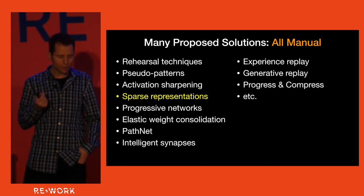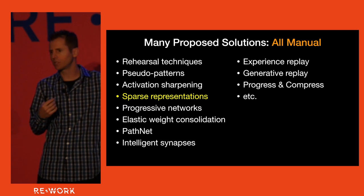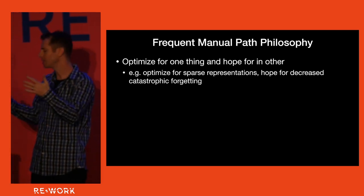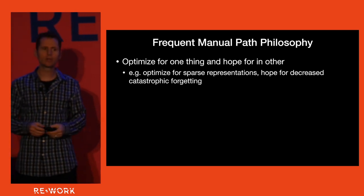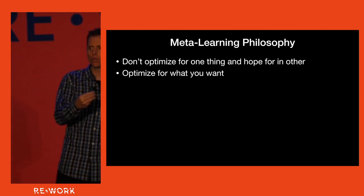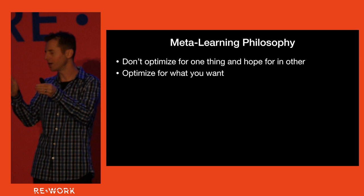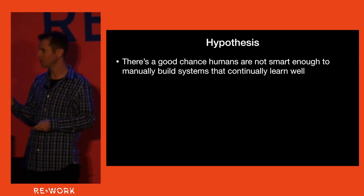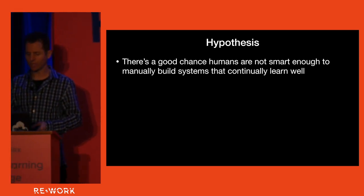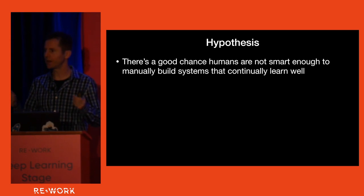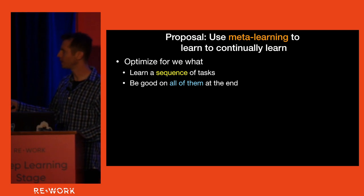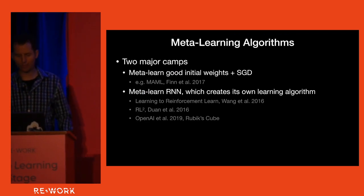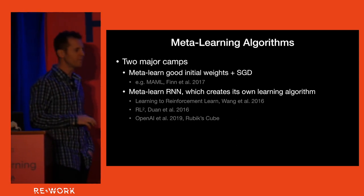The manual path frequently takes the strategy of encouraging sparse representations — creating an auxiliary loss to reward the system for learning sparse representations, and then hoping that helps with continual learning. That can work to some extent, but the meta-learning philosophy teaches us there is a better approach: don't optimize for one thing and hope for another. Instead, specifically optimize for what you want out of your system, which in this case is to learn to continually learn. My hypothesis is that we are not smart enough as individuals to figure out how to create systems that solve catastrophic forgetting, and we should use the meta-learning philosophy — directly learn to continually learn. That means optimizing for learning a sequence of tasks and being good on all of them at the end, not just the last task.